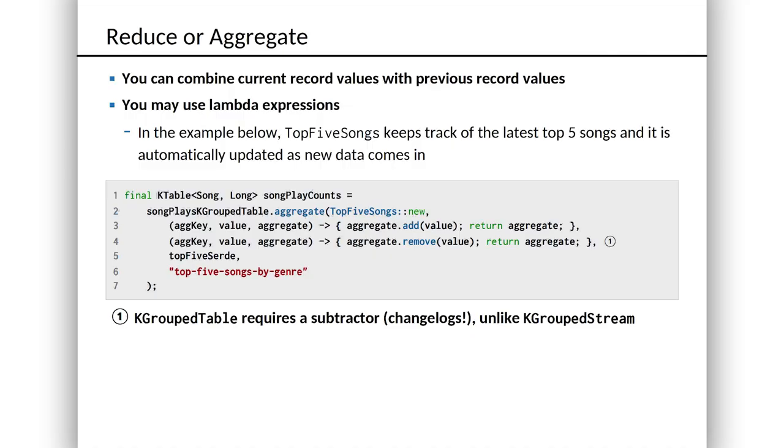What if we wanted to take it up a notch and maintain a list of the top five by play count? Well, that is fundamentally an aggregation operation. Of course, counting is an aggregation operation, but counting is one that's baked into the API. Your top five songs is a custom aggregation. And for that, we use the aggregate method. So let's imagine we started with a K group table, a lot like the one we just made in the last step. Here on line two, we've got a thing called song plays K group table. Now K group table has a method called aggregate and aggregate takes a few parameters.